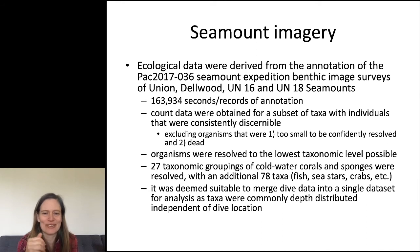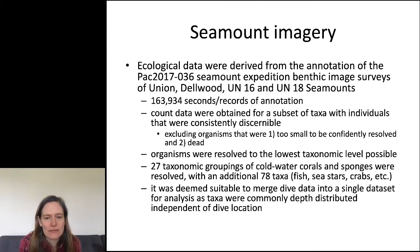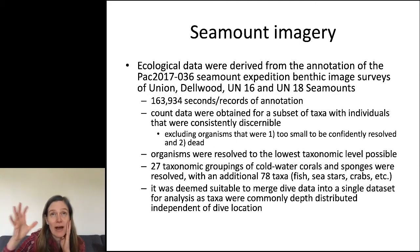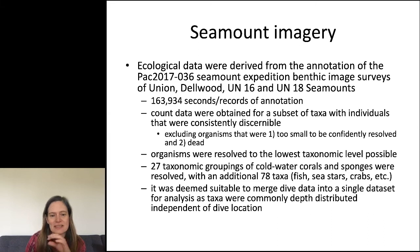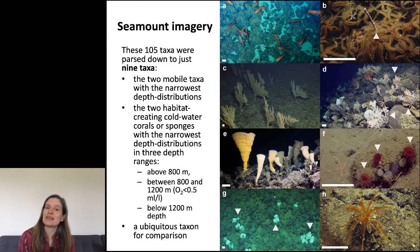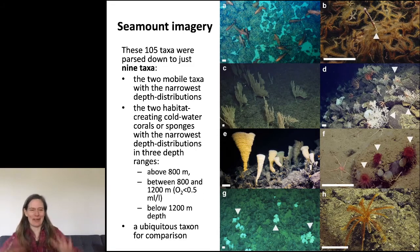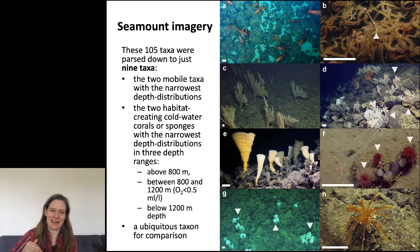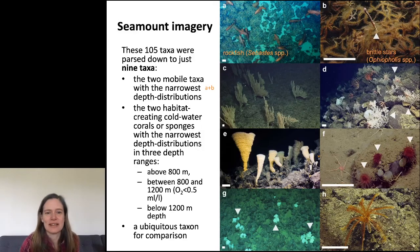A quick summary of stats: many records were annotated — it took a lot of work — and they found 105 different taxa resolved to the lowest taxonomic level possible. Organisms too small to identify confidently or dead ones were excluded. We focused on cold-water corals and sponges because they're habitat-building species. It was deemed suitable to merge dive data across seamounts because taxa were commonly depth-distributed, not strongly seamount-dependent. From 105 taxa we narrowed down to nine, focusing on narrowly distributed and habitat-building taxa.